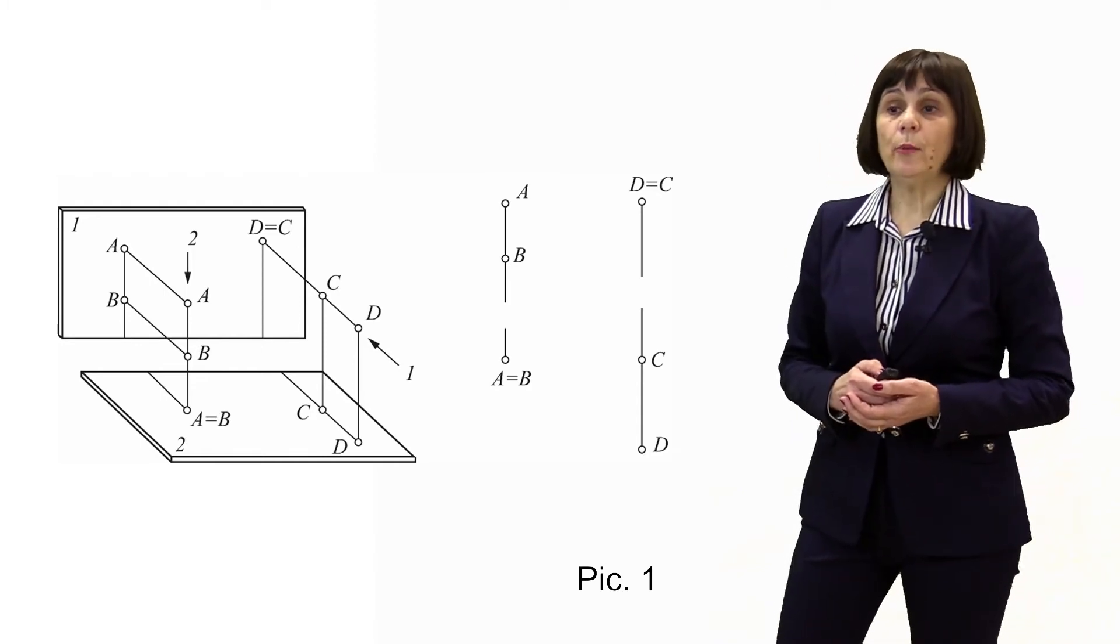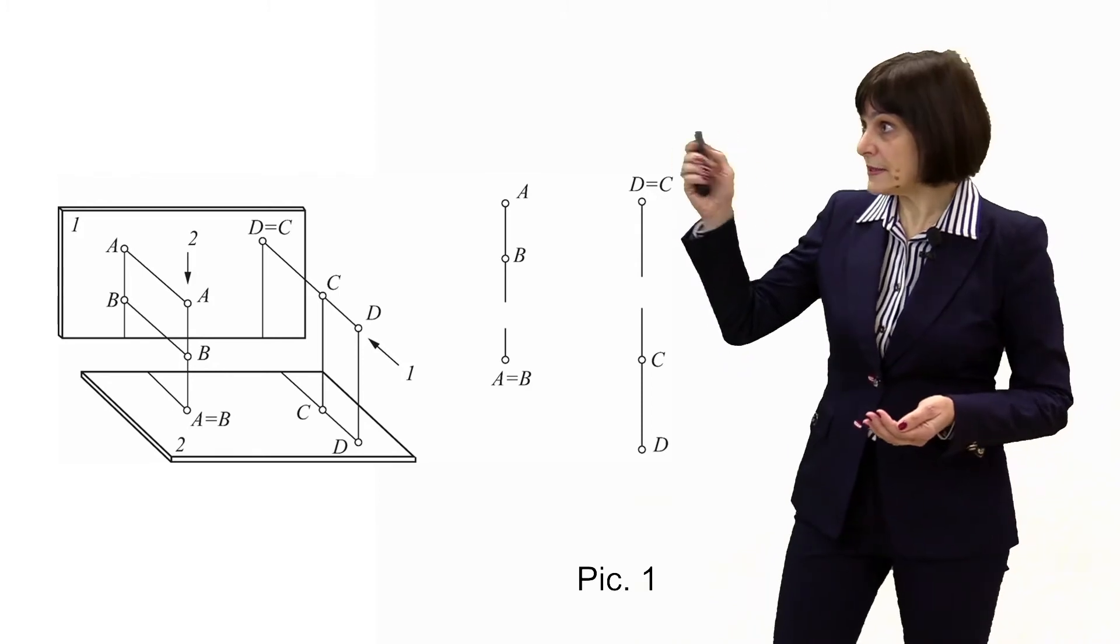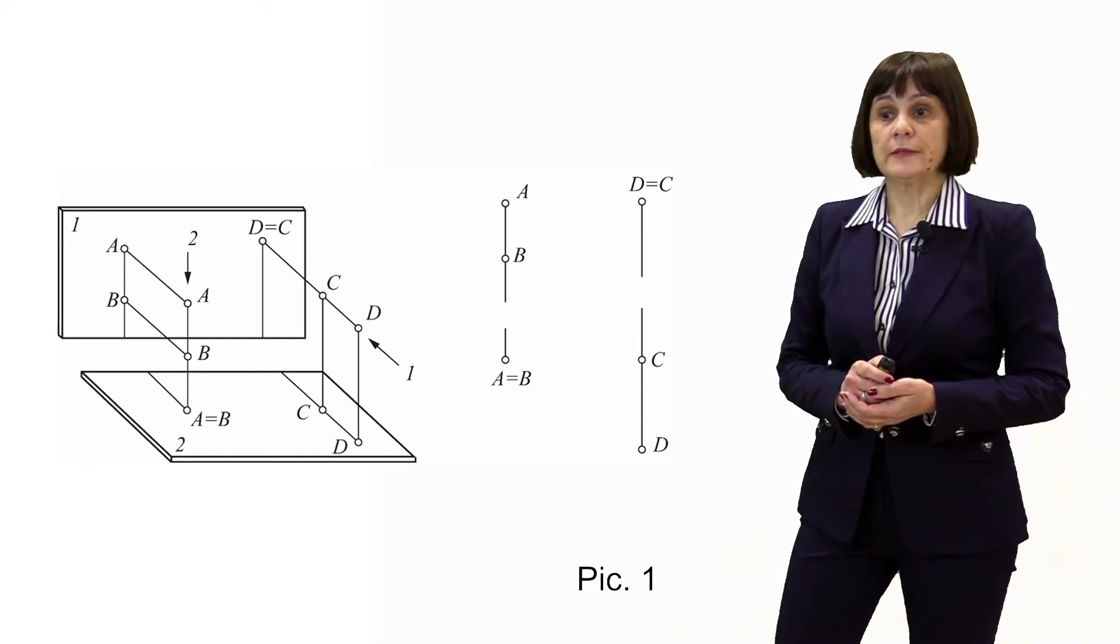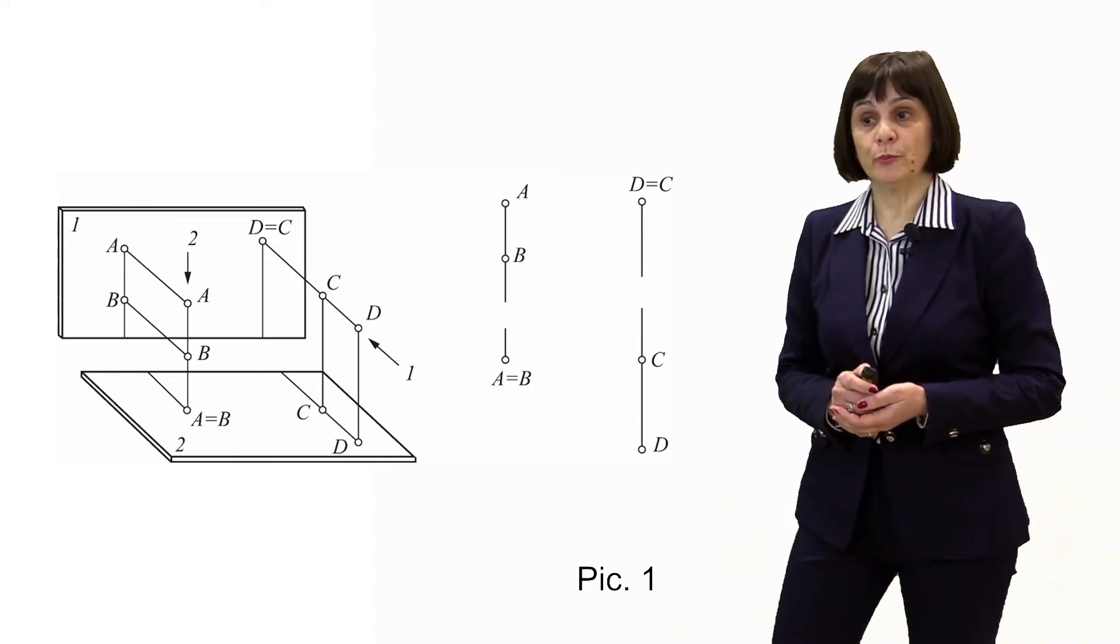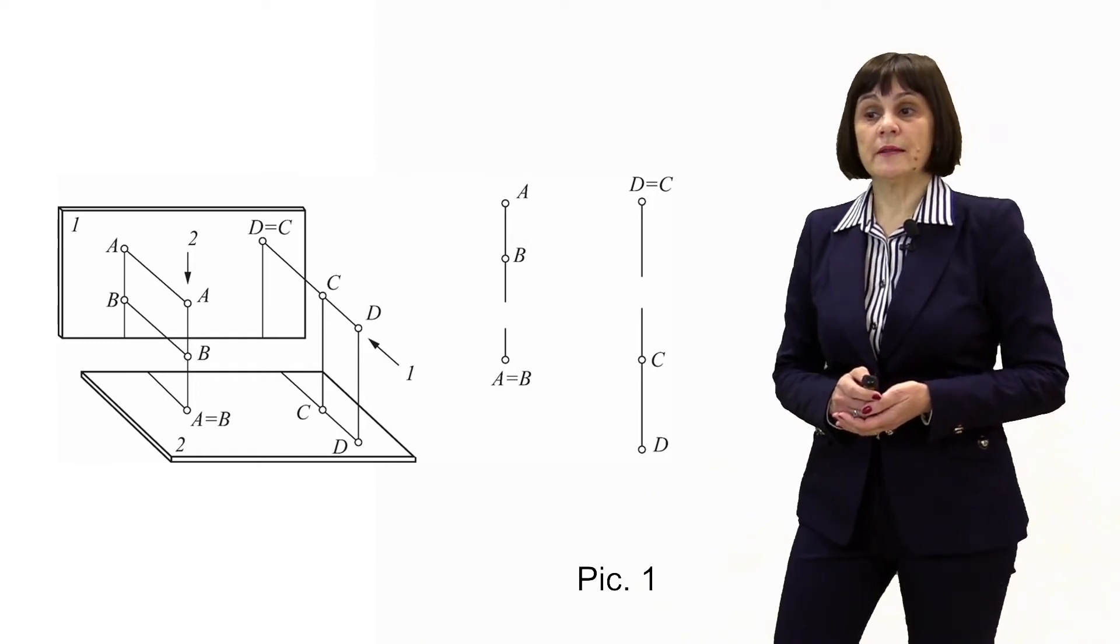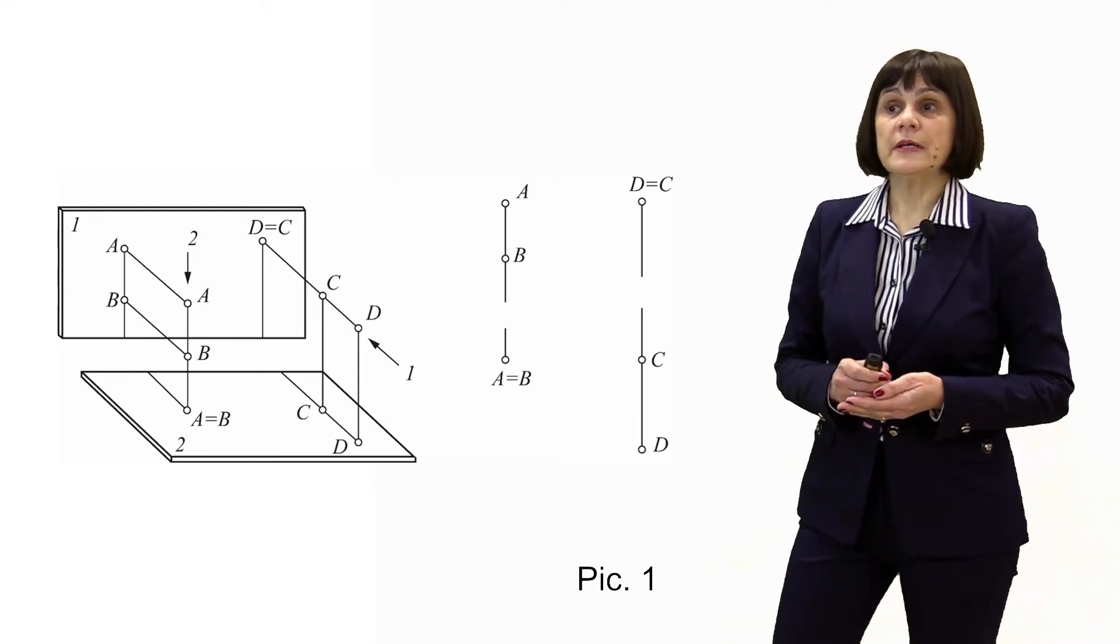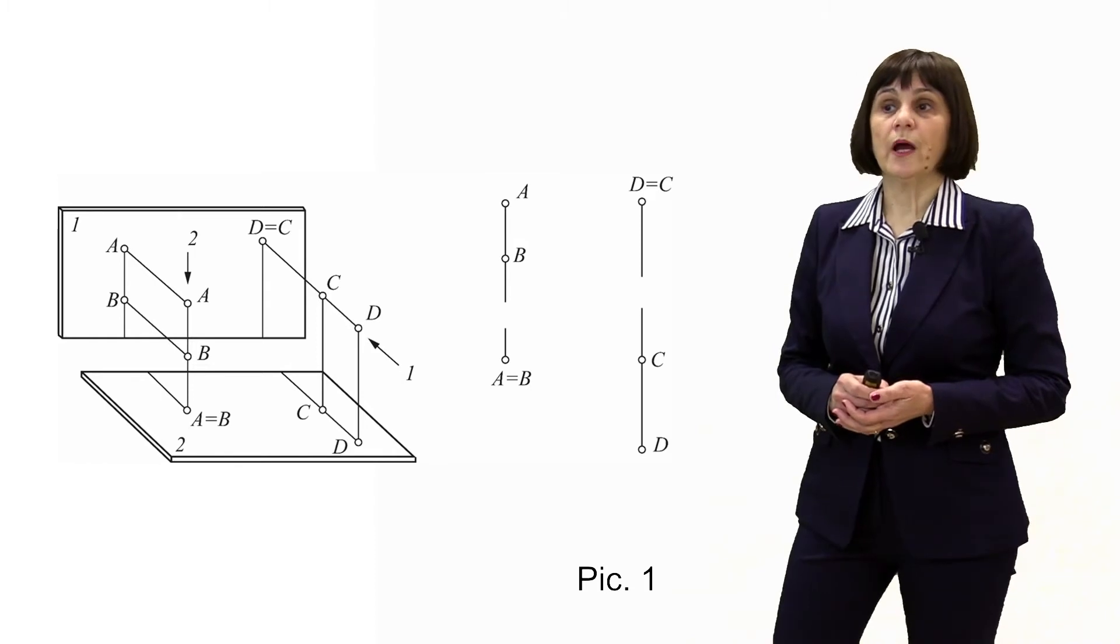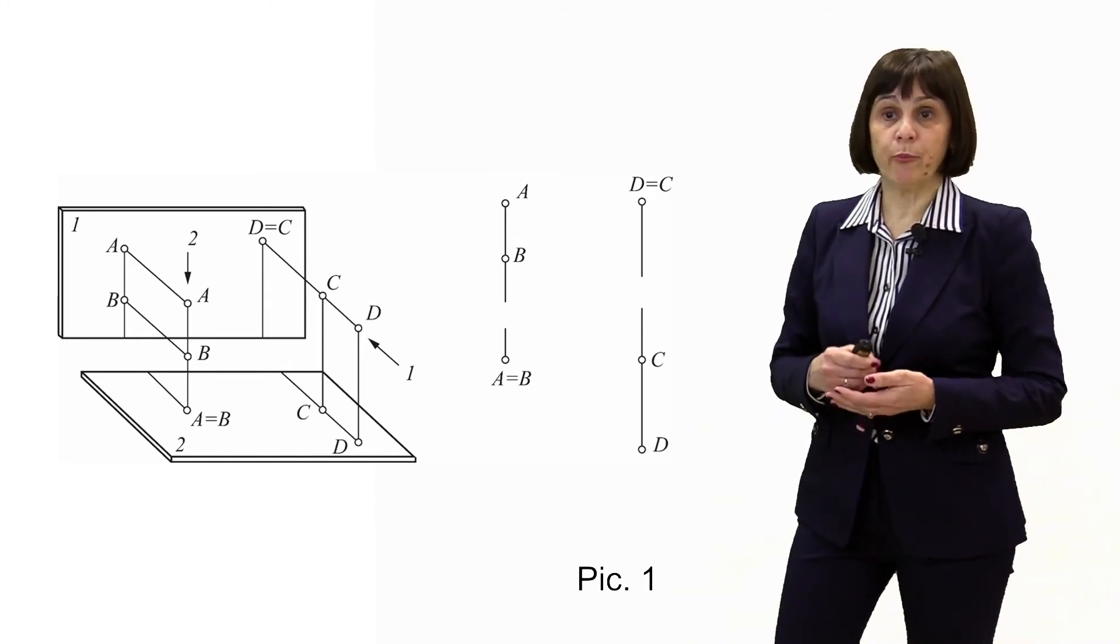In the complex drawing on this picture, we have two points, point A and B competing in the top view. Point A will be visible in this view since comparing these points in the front view, we see that it is located above point B.